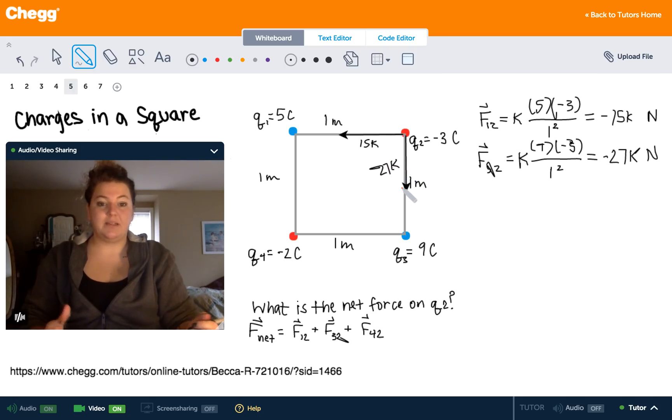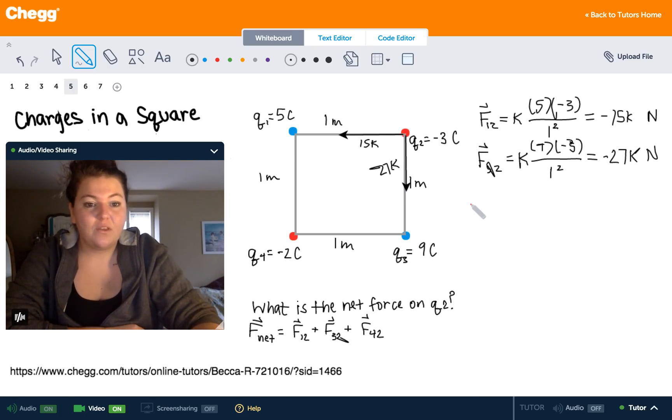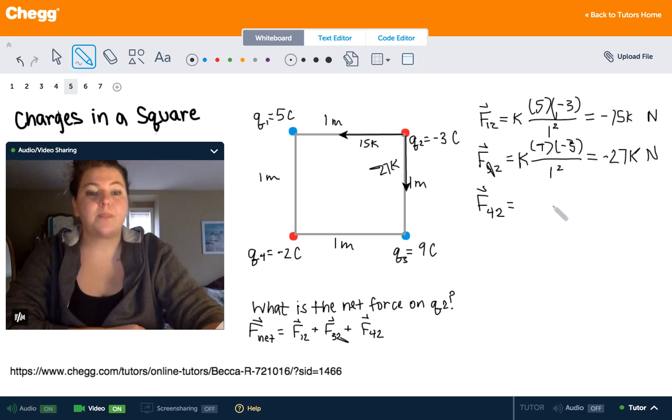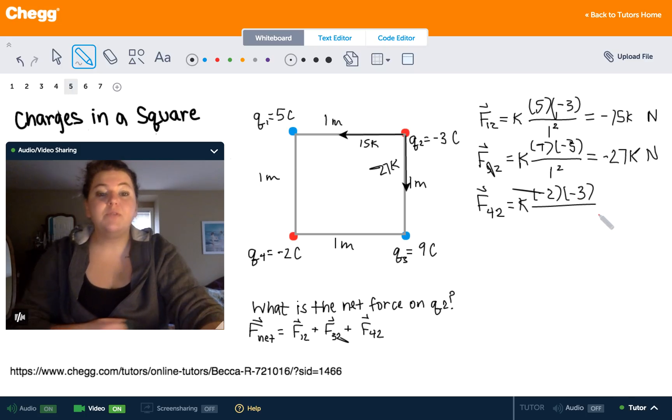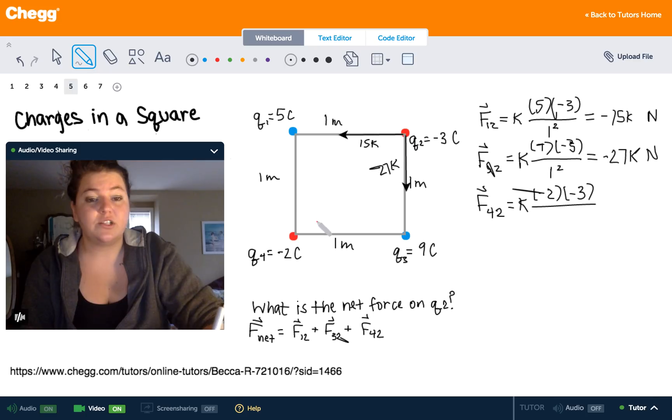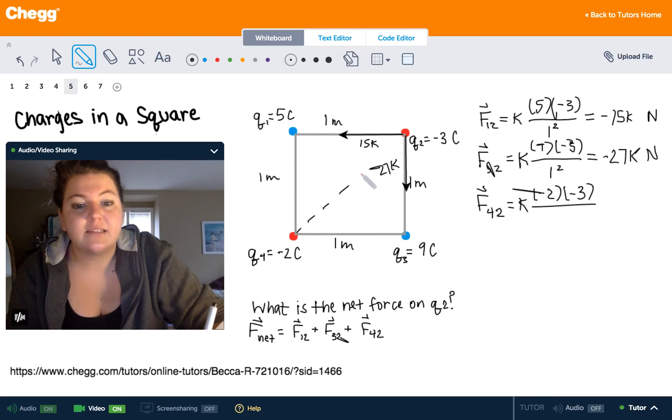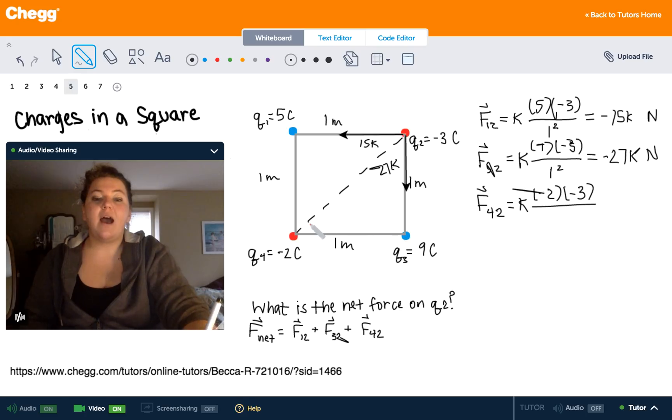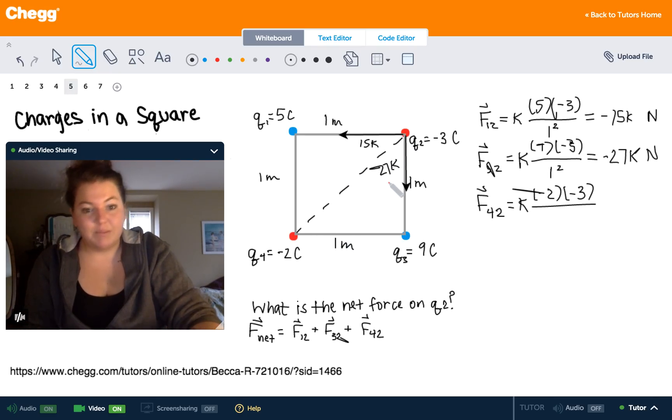Because again, the negative just means what direction it's pointing in. So finally, we need to find the magnitude and the direction of F₄₂. So again, we have our k. We have a charge of negative two coulombs on that fourth charge. And on that second charge, we again have a charge of negative three coulombs. But this time, be really careful. The distance between these two charges is not one meter. We need to find out what that distance is. It's going to be the length of this right here. And what we have right here is a triangle with legs that are one meter long. So what we can do is we can solve for the hypotenuse of that triangle using the Pythagorean theorem.